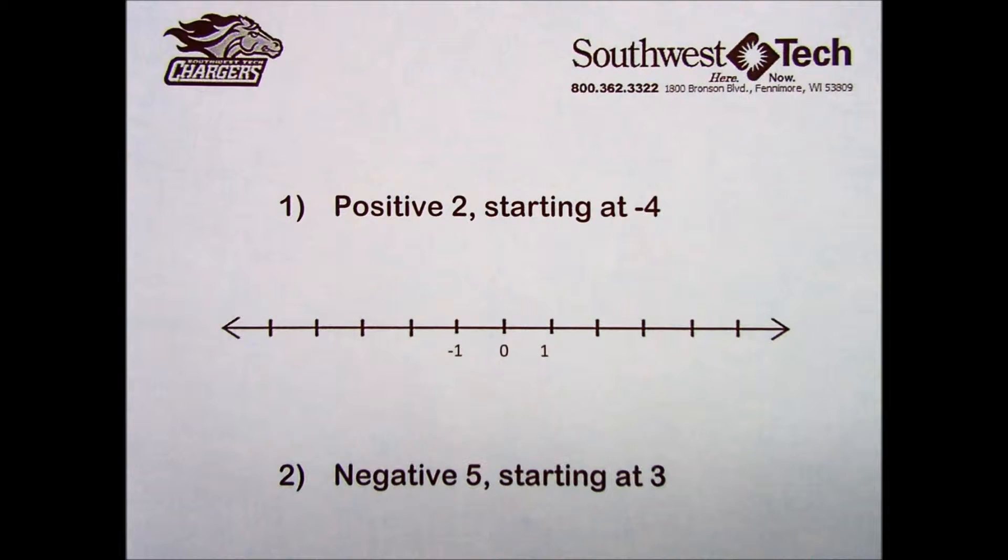Positive numbers can be pictured as arrows which point to the right, and negative numbers can be pictured by arrows which point to the left.